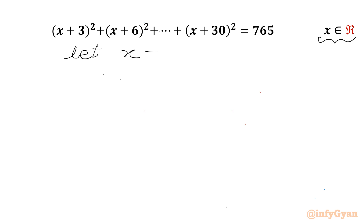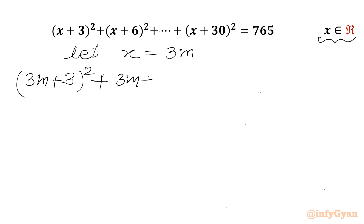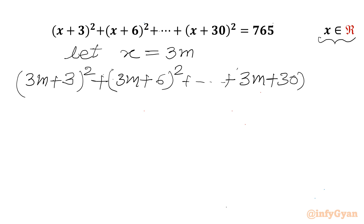I will consider x is equal to 3 times m. So our equation will become (3m + 3)² plus (3m + 6)² plus (3m + 30)² equal to 765.